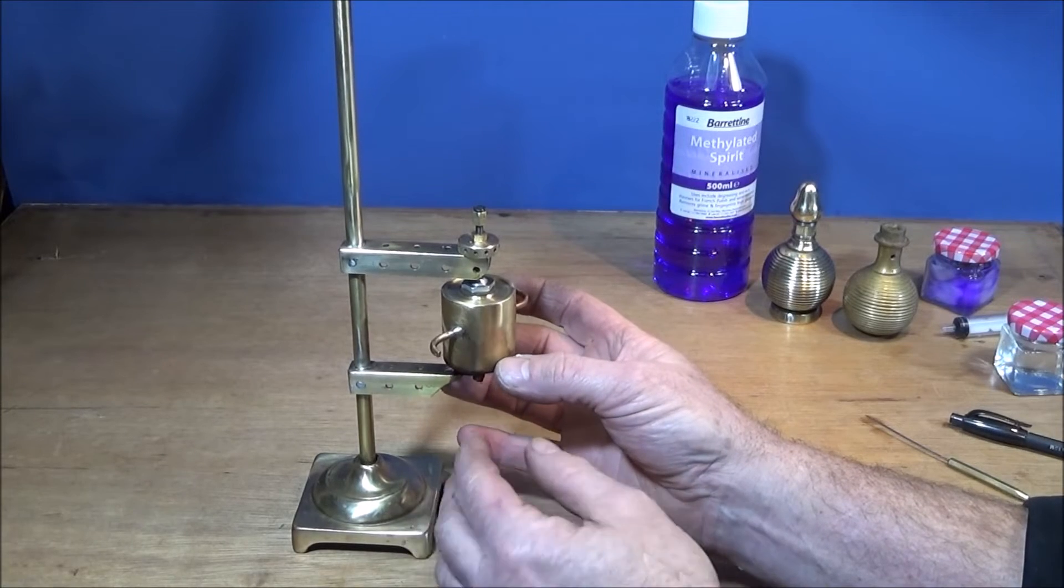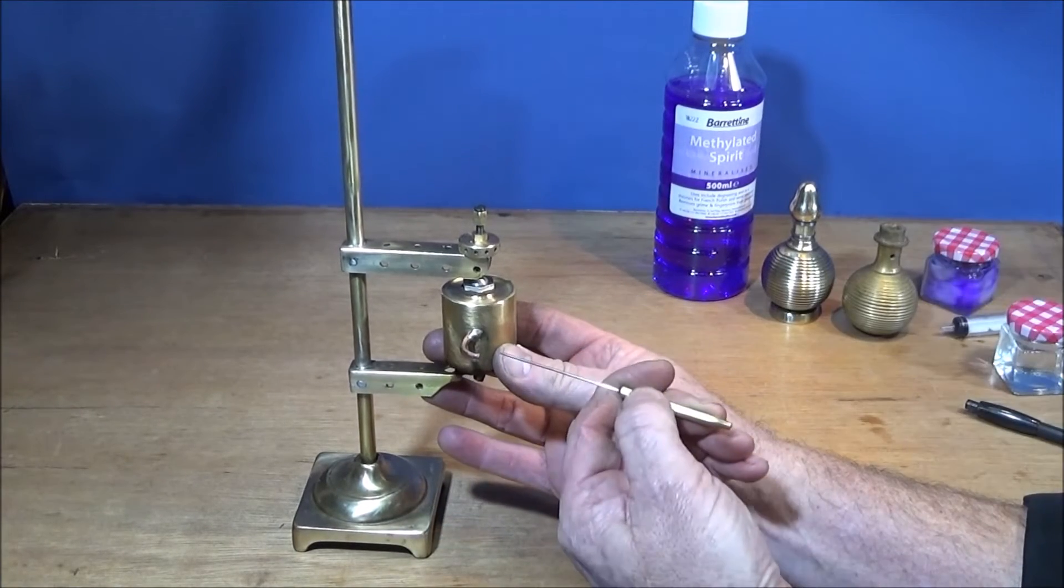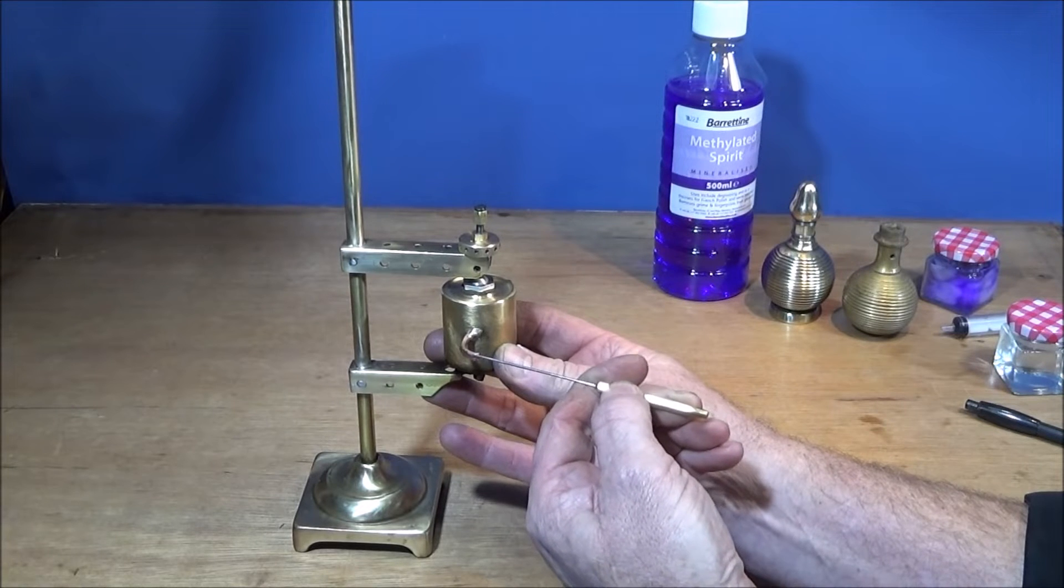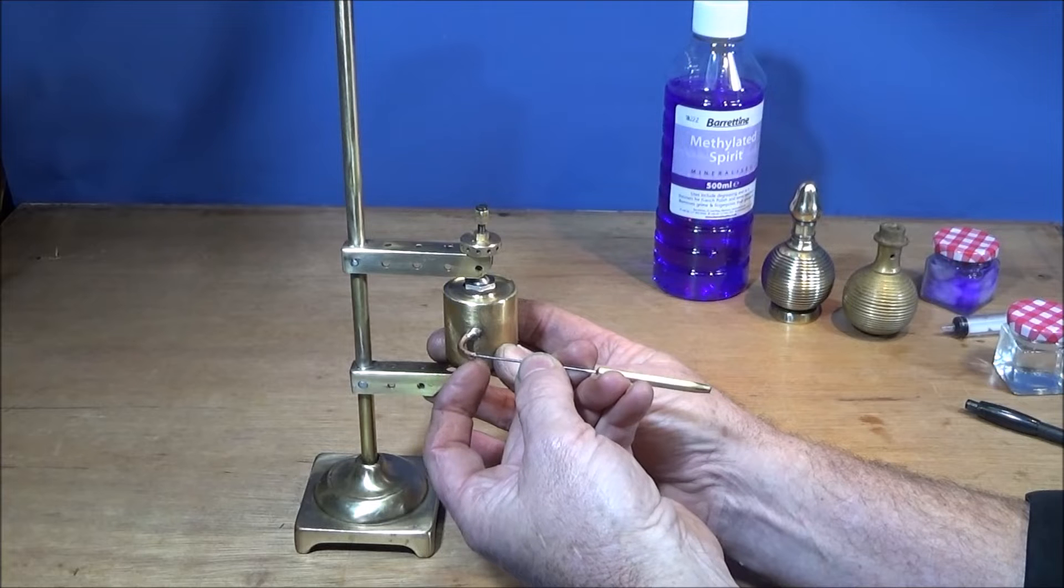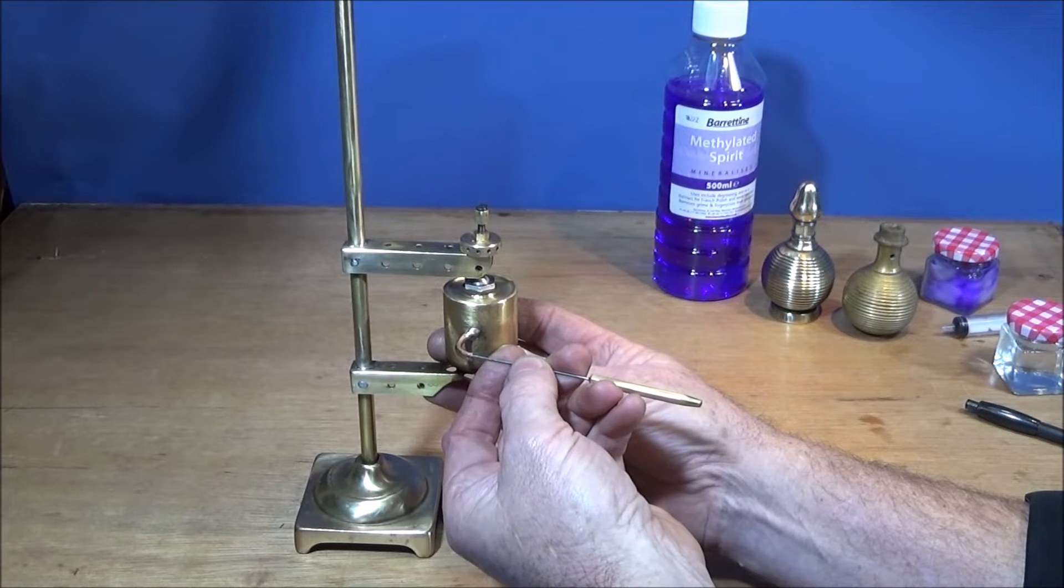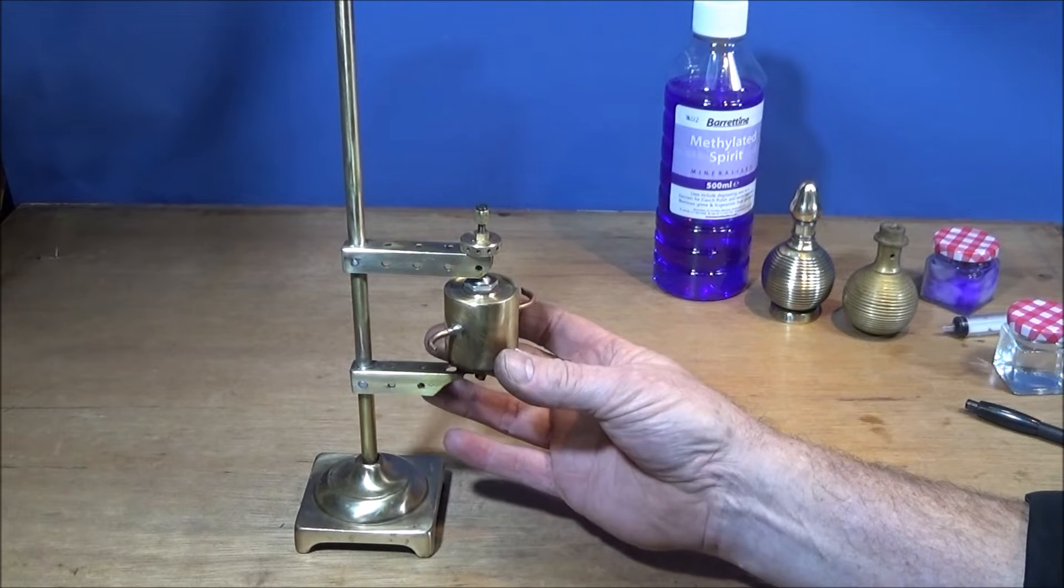When you do the ends there, you have to put a needle up inside the end and flatten the copper pipe around that one so it leaves a very small hole so the pressure builds up a bit inside the cylinder.